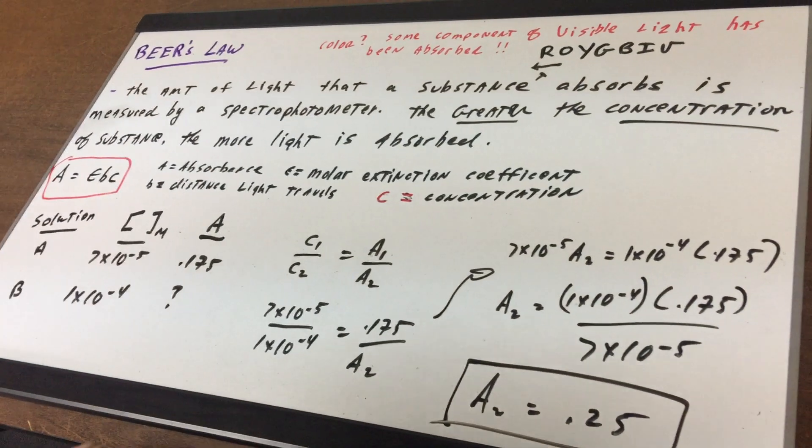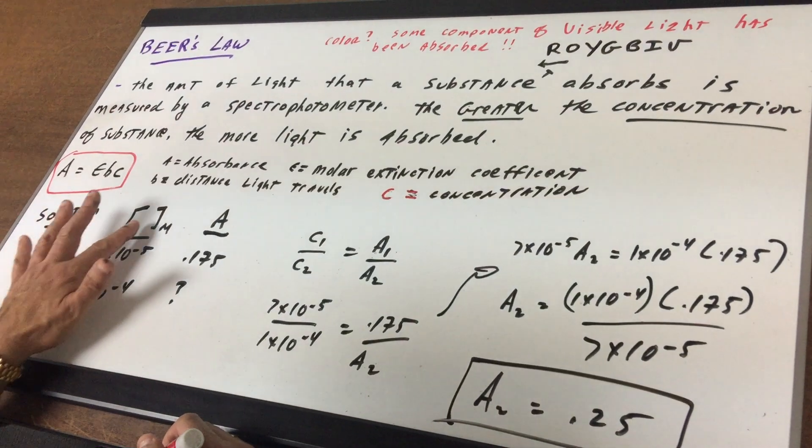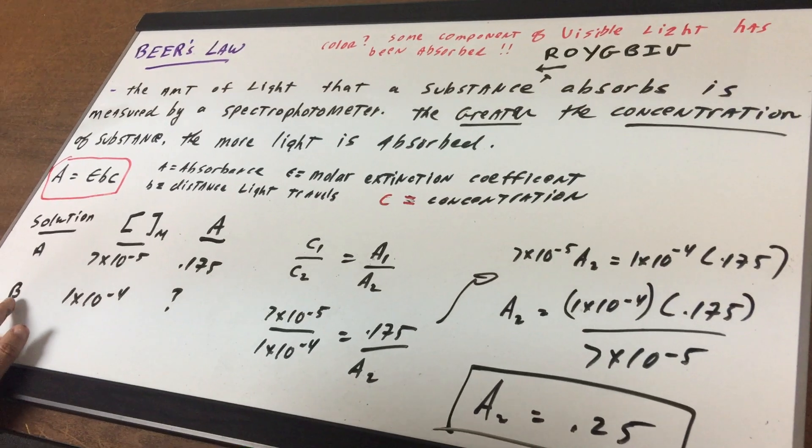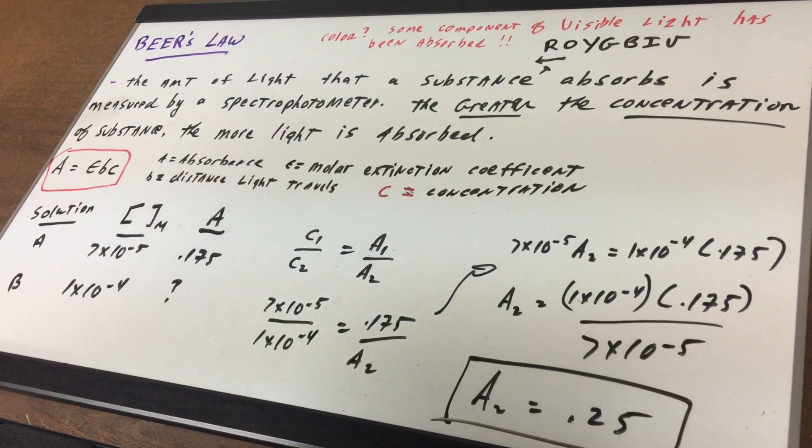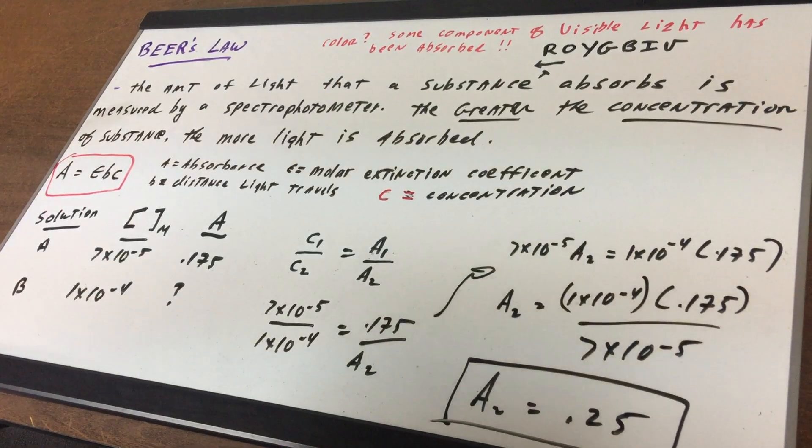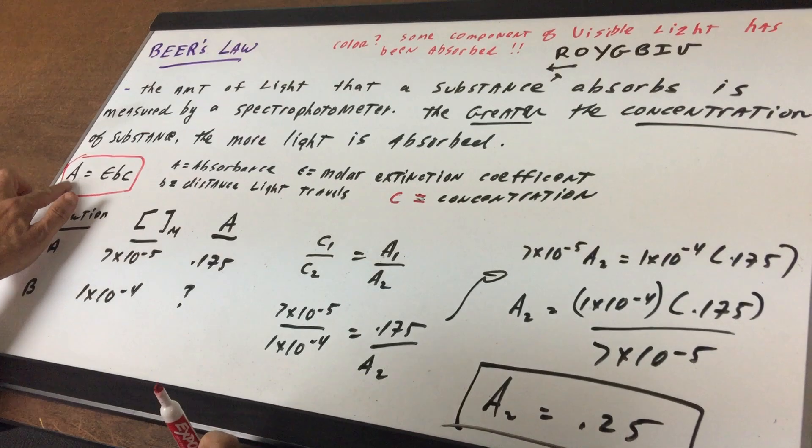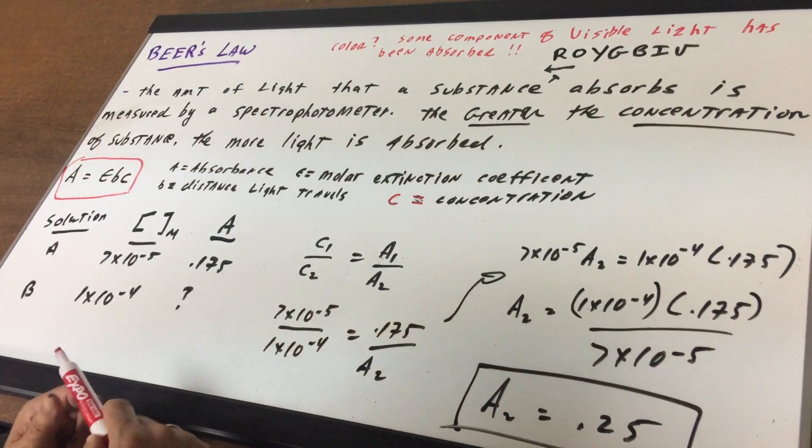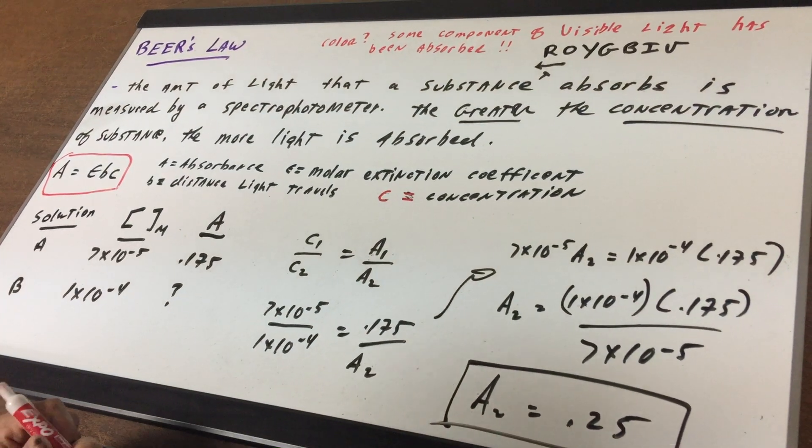The first thing we want to do here is I give you a solution with a concentration and absorbance, and then I give you another solution with a concentration and I want the absorbance. So what we've got to do on a problem like this is simply set up a ratio. Since these are directly related, I can say that concentration one over concentration two is going to be absorbance one over absorbance two.